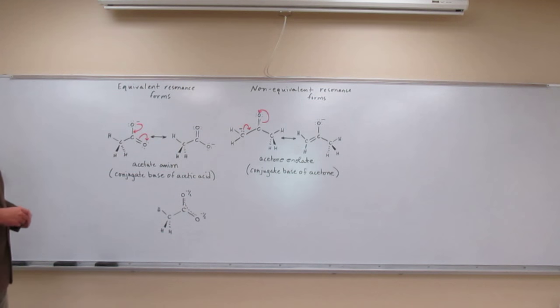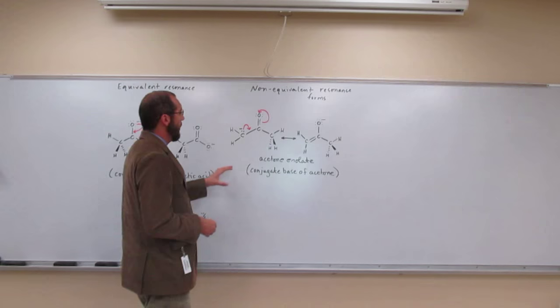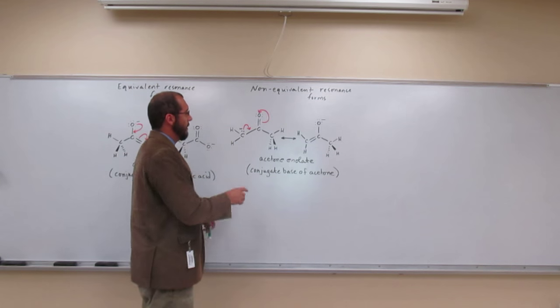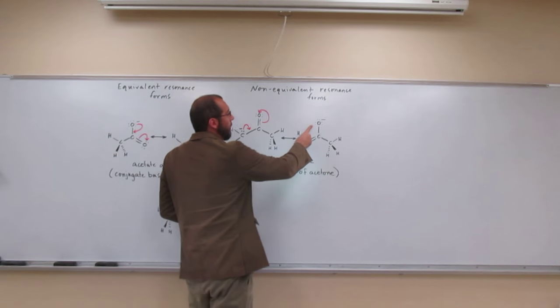Okay, remember we're just showing the motion of the lone pair of pi electrons, whereas if we compare that to the conjugate base of acetone, the acetone enolate, we can either show the negative charge being on the carbon or the oxygen.